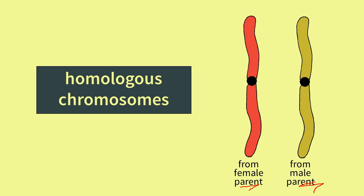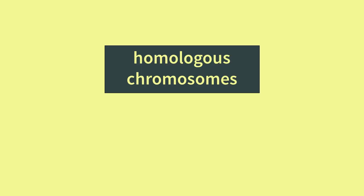For example, the chromosome from the female parent might carry blood type A, and the male parent might carry blood type O. To produce more cells that have the same number of chromosomes, each one must be replicated.